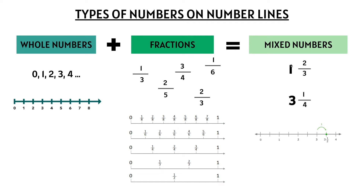Mixed numbers are whole numbers and a fraction together. So let's read this: 1 and 2/3, 3 and 1/4. We have 3 and a half. So a mixed number is a whole number and a fraction together.